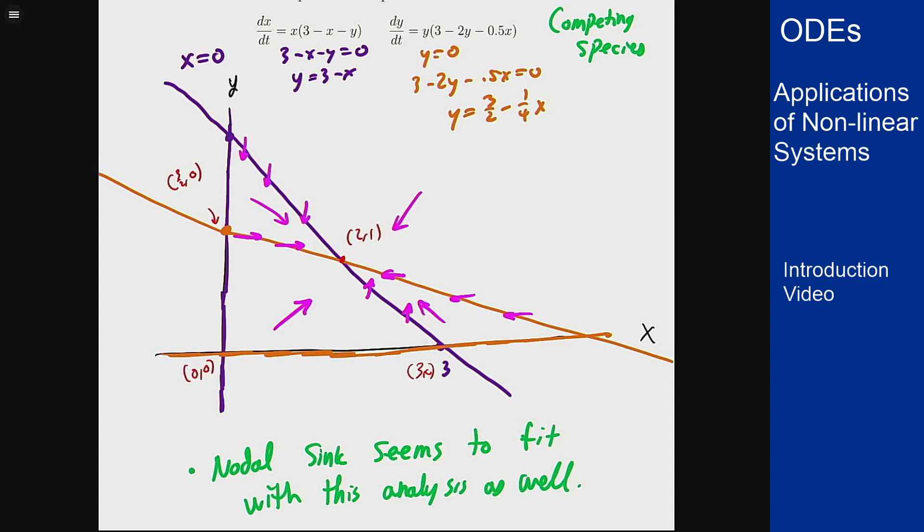So the population wherever it starts should make its way in towards the middle following the trajectories in one way or another. This doesn't give me the actual trajectory. This is the general flow of this equation, so how in general it's going to behave but not the exact path it's going to follow.